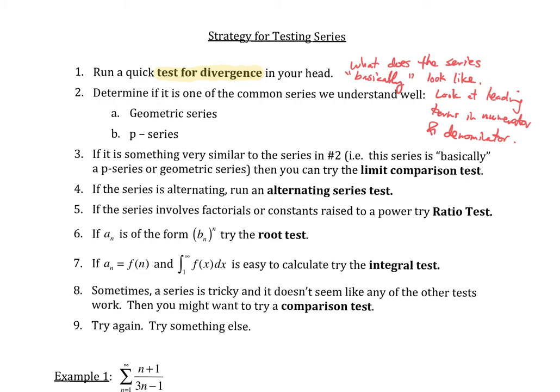The second thing is to determine if it's one of the common series you understand well. If it basically looks like a geometric series, that's great because you understand geometric series well. Same for p-series. As a quick reminder, absolute value of r less than one means the series converges for a geometric series. For a p-series, if p is greater than one, the series converges.